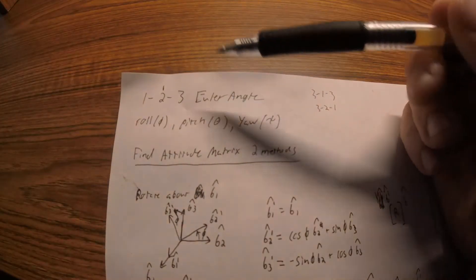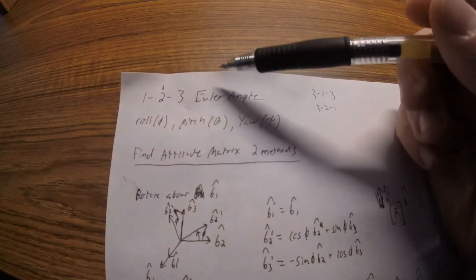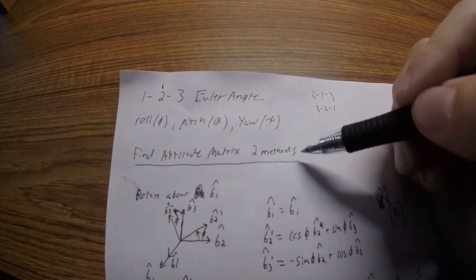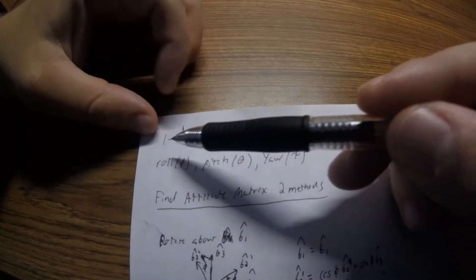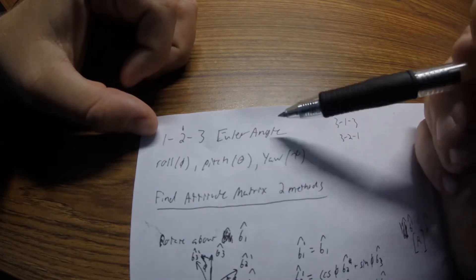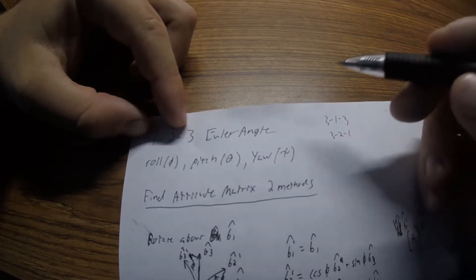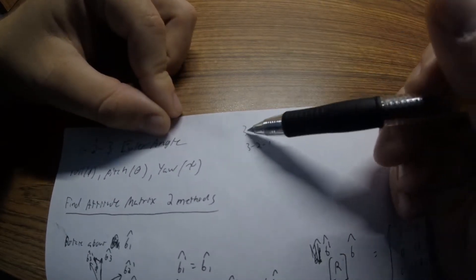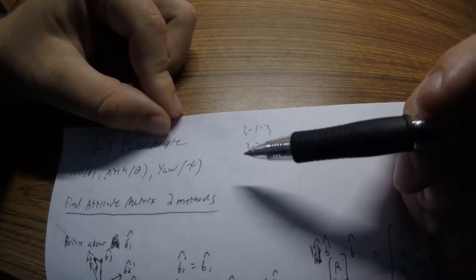In this video we're going to talk about how to find an attitude matrix for an Euler angle rotation. I'm going to show two different methods. For this video I'm going to show specifically a 1-2-3 Euler angle rotation, but this can be done with all the different combinations of Euler angle rotations, including but not limited to a 3-1-3, a 3-2-1, a 1-3-2 — there are many combinations.